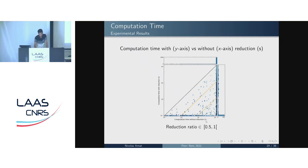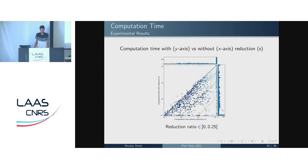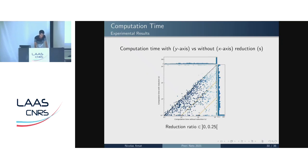When you have a good reduction ratio, our approach is very efficient and accelerates computation of reachability properties significantly. We also examined instances with a low reduction ratio — between 1% and 24%. Even there, many properties that time out without reductions can be computed using them, with speedups of 10 or more.